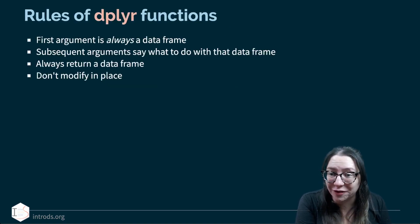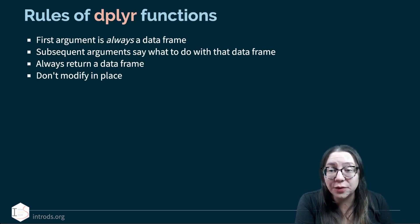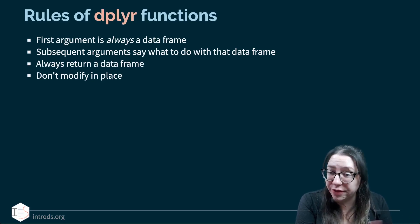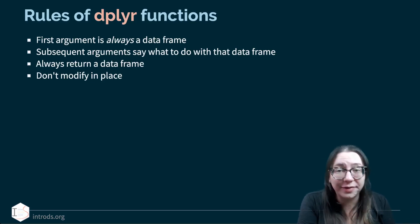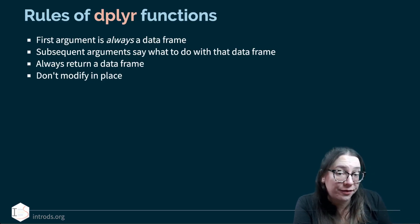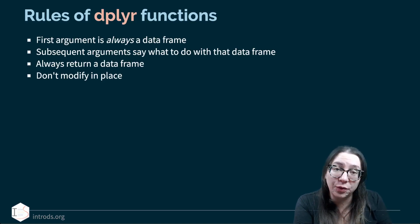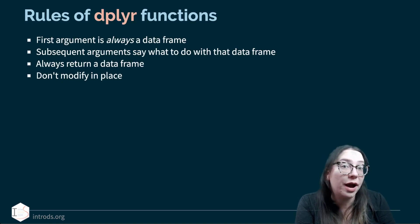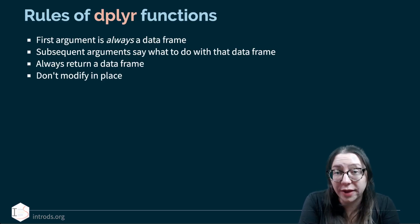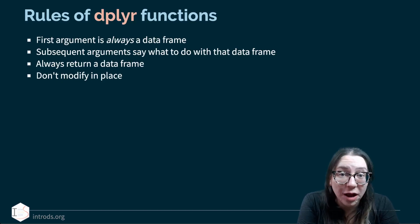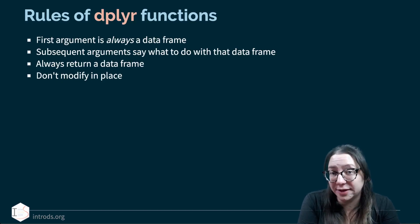There are four rules of dplyr functions. First, the first argument is always a data frame. Second, the subsequent arguments say what to do with that data frame. Third, they always return a data frame — they take in a data frame and return one. Fourth, they don't modify in place, meaning when we apply a dplyr function, we're not changing that data frame on the spot.